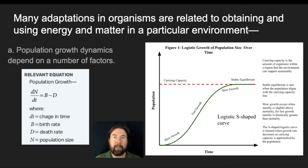So many adaptations of organisms are related to obtaining and using energy in particular environments. And so it's important to know that when we think about how populations grow, there are really sort of four factors that we think about that are going to influence overall what the population growth is going to look like. And those four factors are the birth rate, the death rate, the rate of immigration, and the rate of emigration.